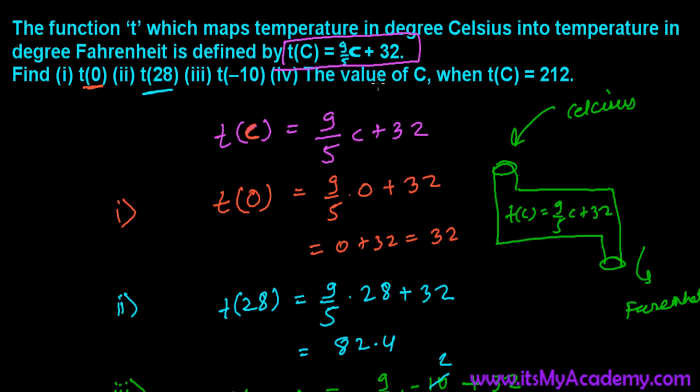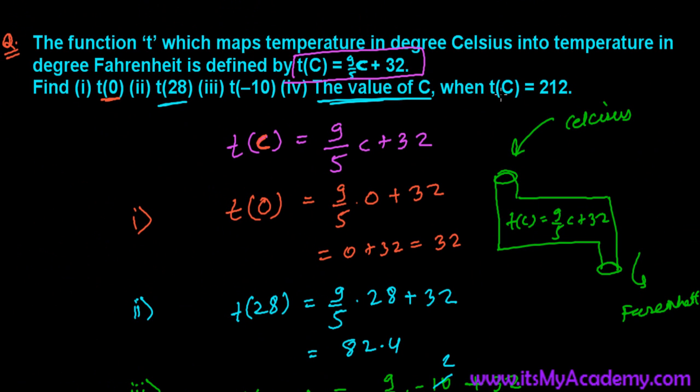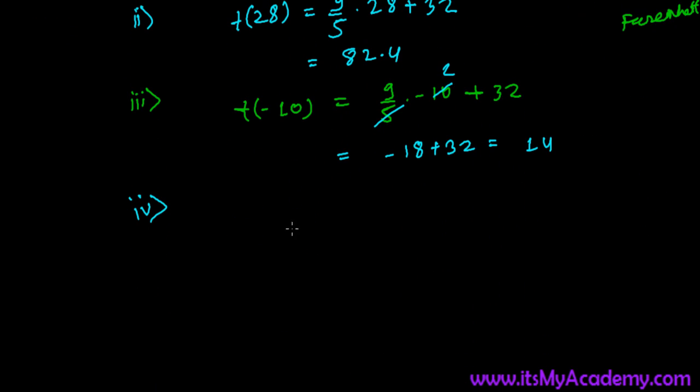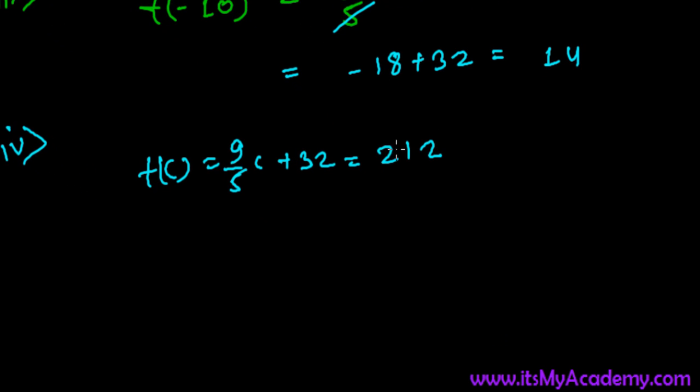The fourth one is a little different. The value of C when t(C) is 212. So if the Fahrenheit degree is 212, t(C) as we know, that's 9 over 5C plus 32 and that's equals to 212. So already we are given the temperature in Fahrenheit here, that is 212. So what will be the equivalent temperature in degree Celsius? Now we have a conversion. So it's very simple.